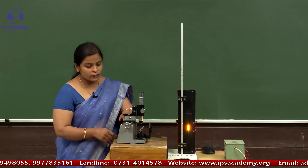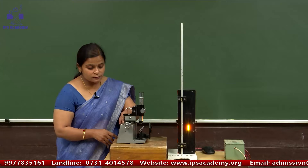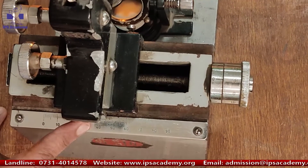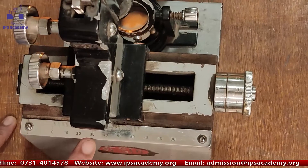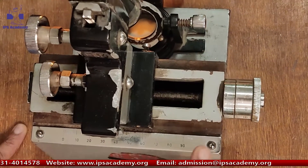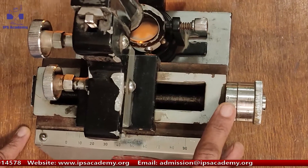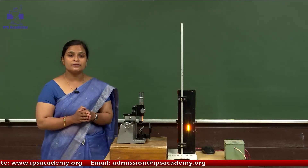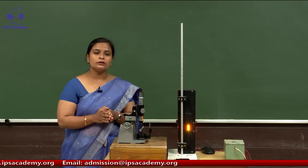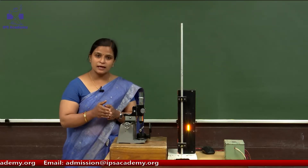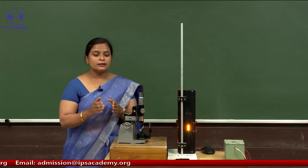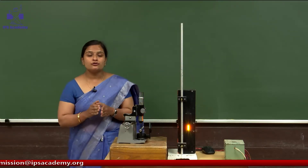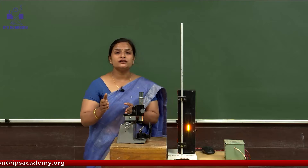Again, we can take the reading when the zero matches with the main scale value — that is 39. So 39 is the main scale reading and zero is matching with the second division, so the circular scale reading is 2. We multiply the least count: 2 × 0.01, then add to main scale reading 39. So we have 39.02 mm.